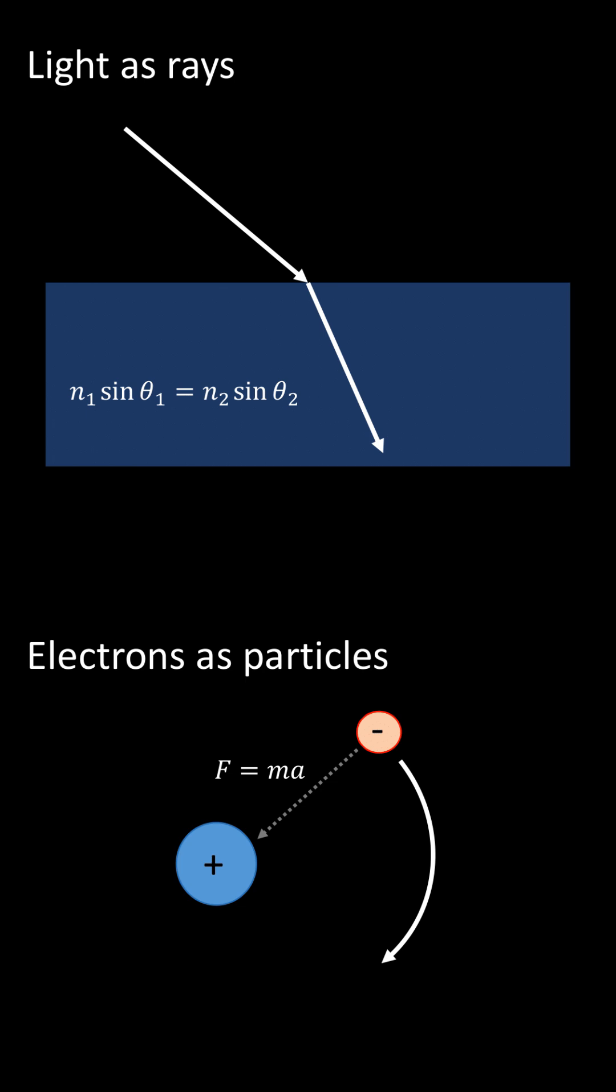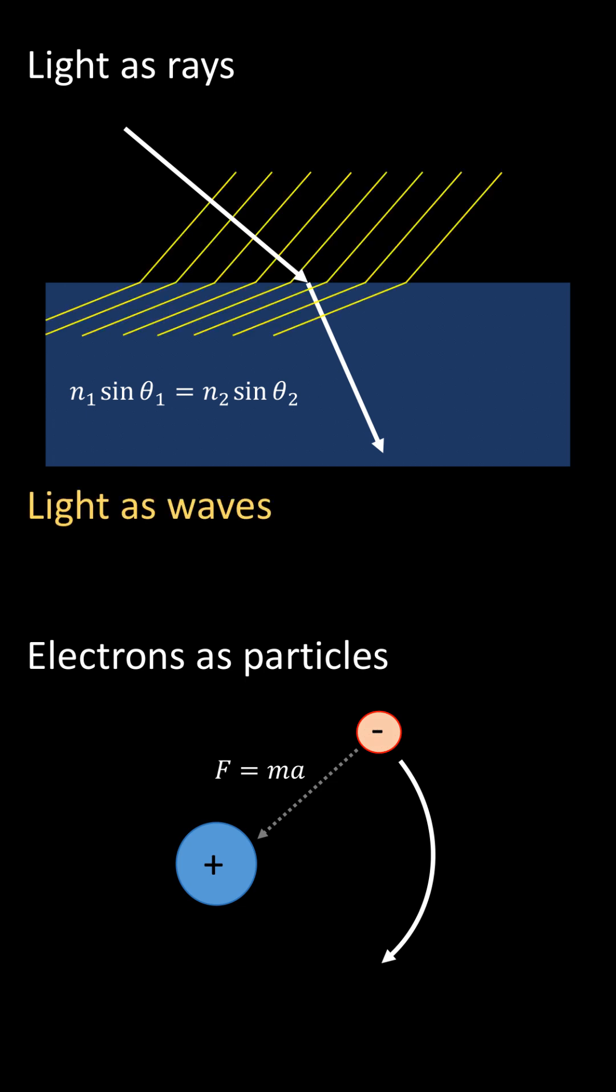It was also known that light is actually a wave. We know that the wavefronts are perpendicular to the direction of the light rays. So if we have an equation that describes how light rays propagate, we can infer a formula that describes how the wavefronts propagate.